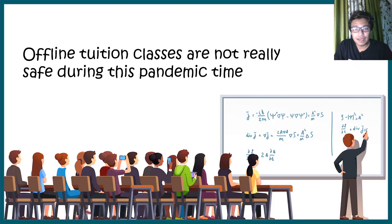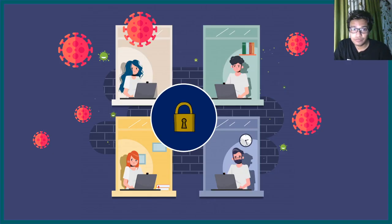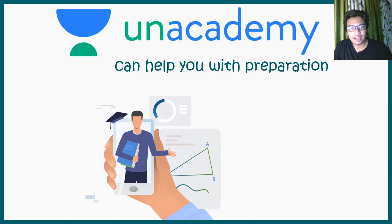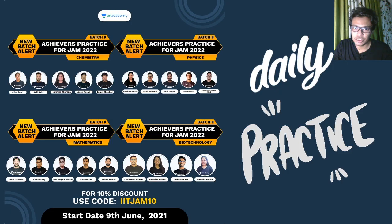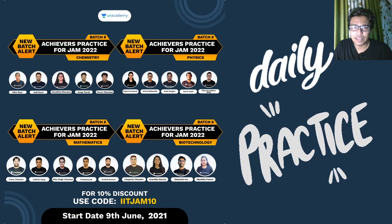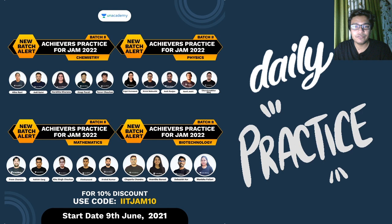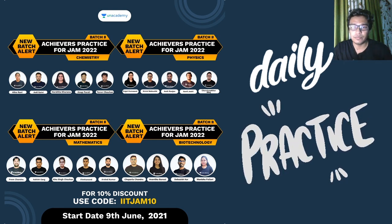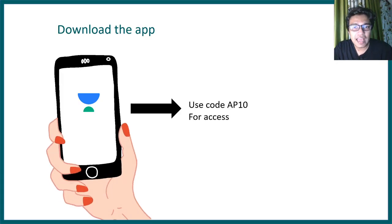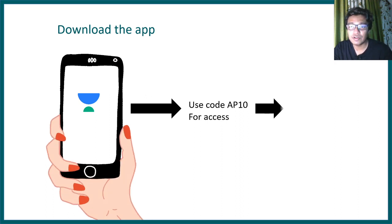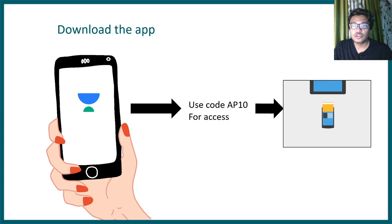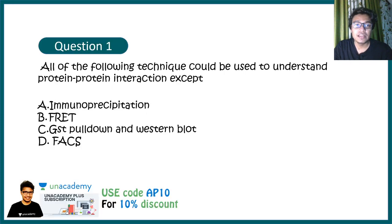Especially during this pandemic time, it's impossible to go to an offline classroom, so you have to think about alternatives. While locked at home, you can study online using Unacademy. There are daily practice sessions, and an Achievers Batch dedicated to practice in subjects like physics, biotech, maths, and chemistry. Download the app and use code AP10 to get a 10% discount.